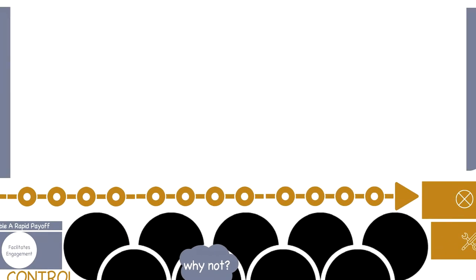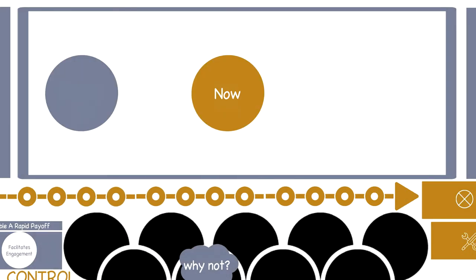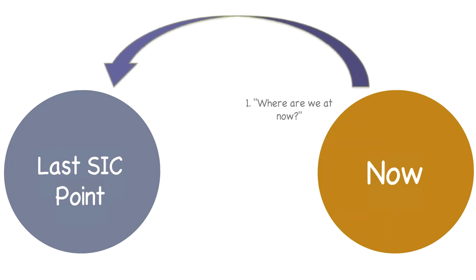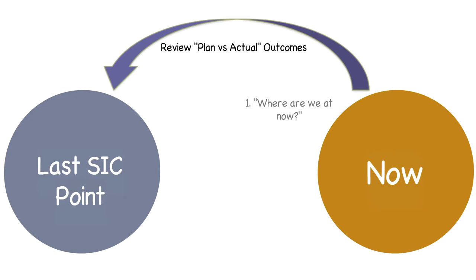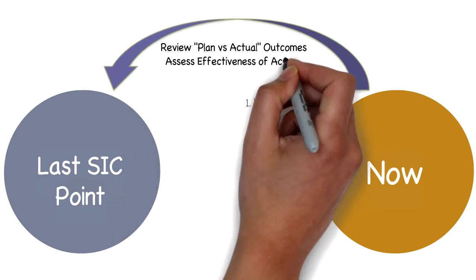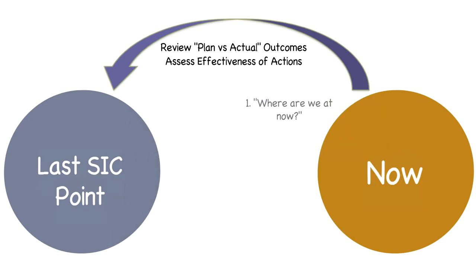At a practical level, short interval control is implemented as a series of short 2-3 minute work-focused reviews, each time using real-time operating data to assess the current state by reviewing any difference between the planned and actual outcomes and assessing the effectiveness of any actions implemented at the last short interval control point.